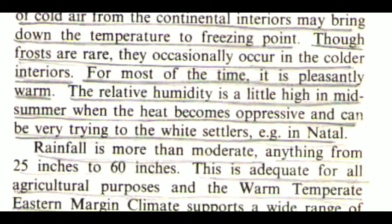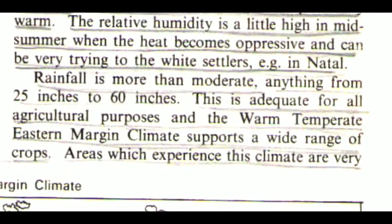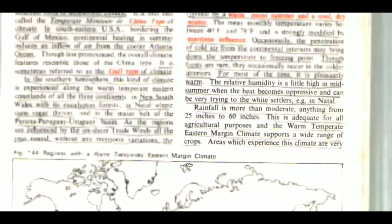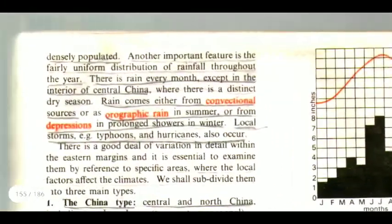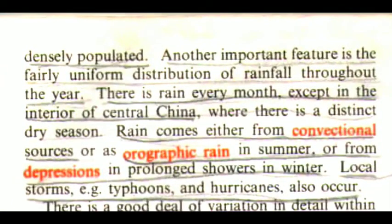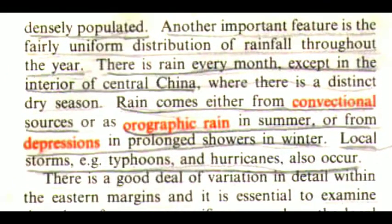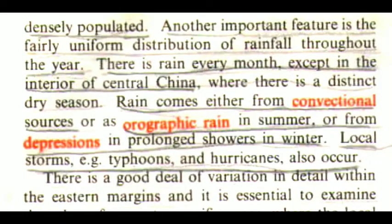The relative humidity is a little high in midsummer when the heat becomes oppressive and can be very trying to the white settlers, e.g. in Natal. Rainfall is more than moderate, anything from 25 inches to 60 inches. This is adequate for all agricultural purposes and the warm temperate eastern margin climate supports a wide range of crops. Areas which experience this climate are very densely populated. Another important feature is the fairly uniform distribution of rainfall throughout the year — there is rain every month, except in the interior of central China where there is a distinct dry season.